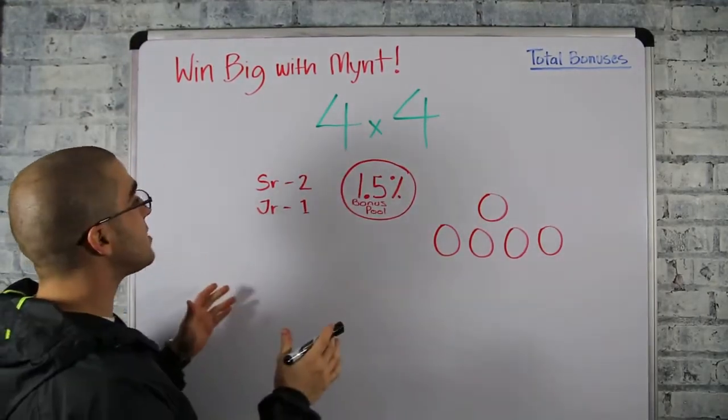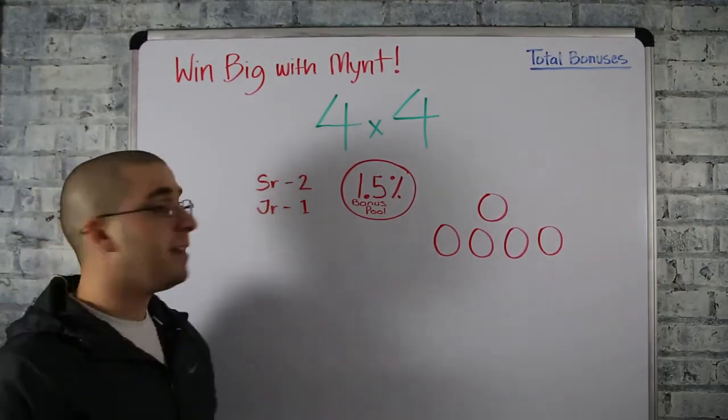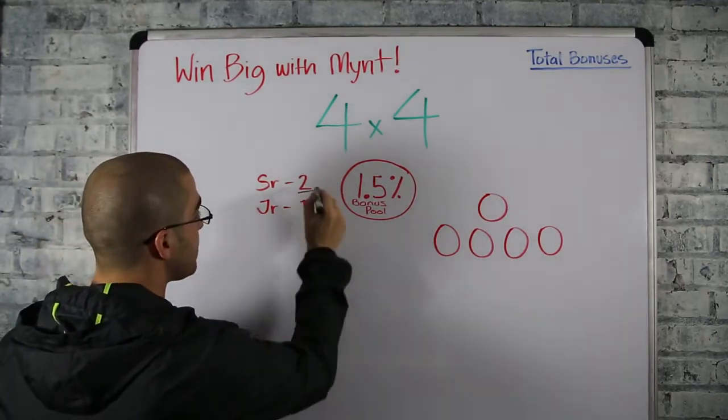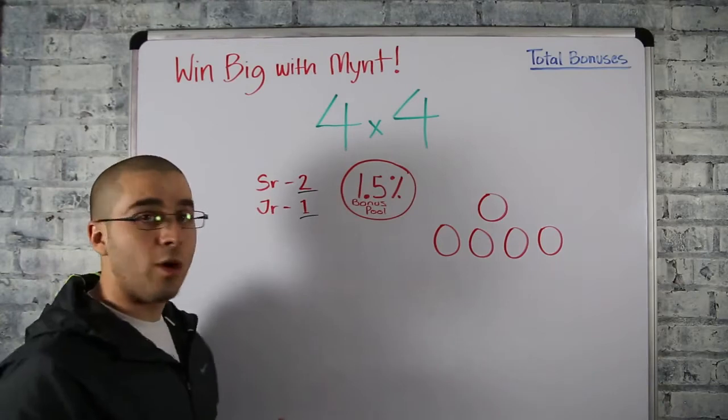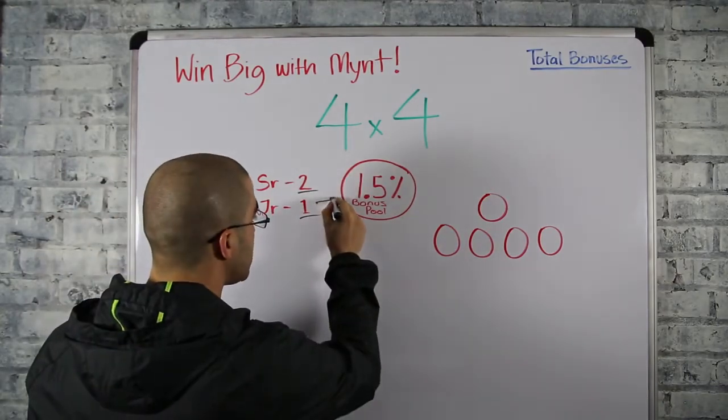So it all starts out with getting started on a senior or junior kit. Now the senior kit gives you two shares, junior kit gets you one. Now these shares go right into our bonus pool.